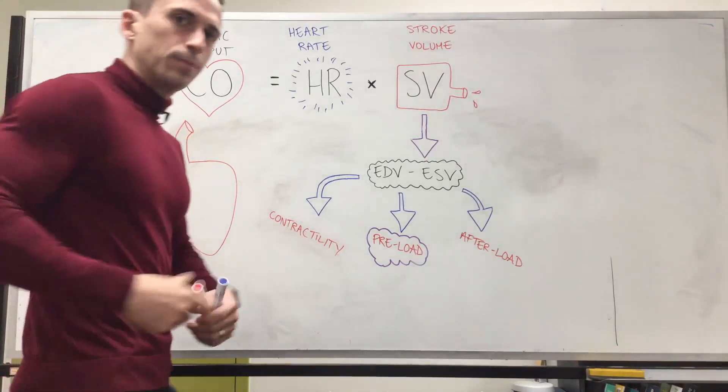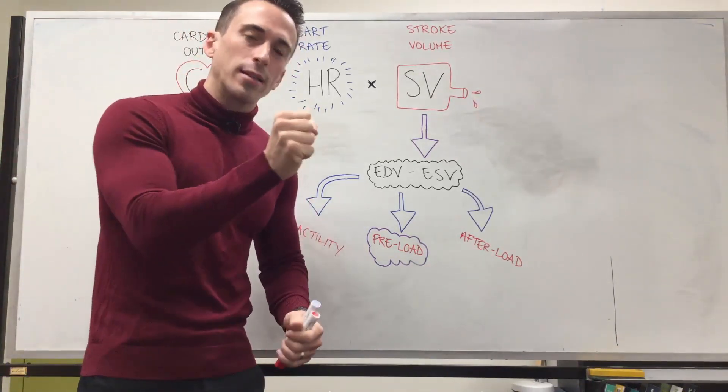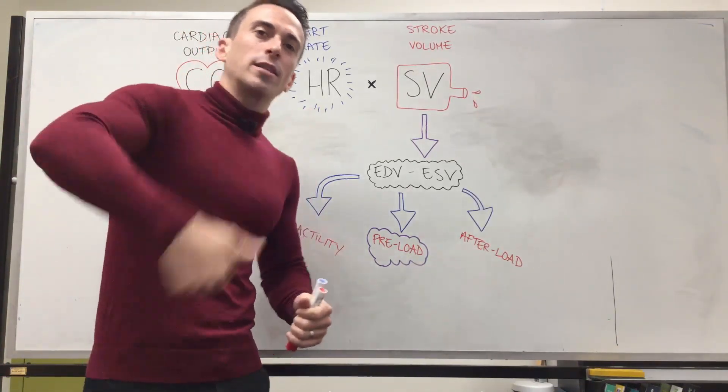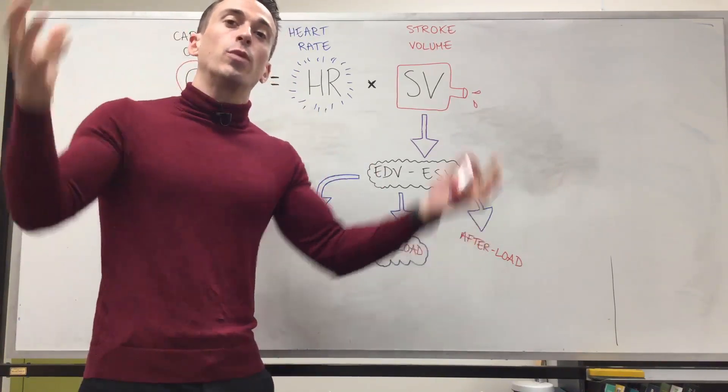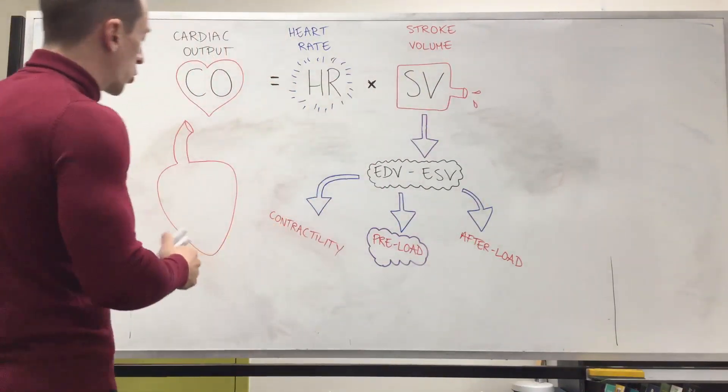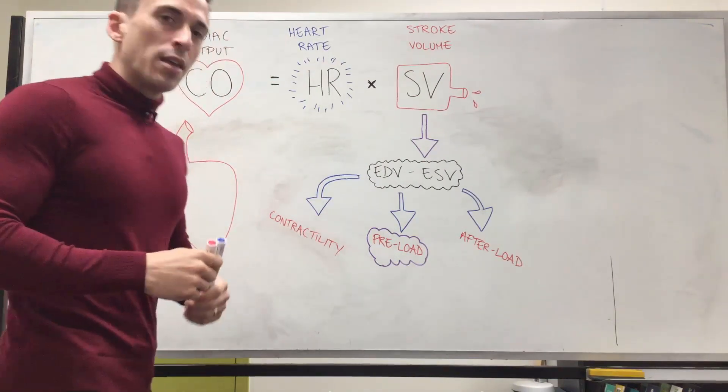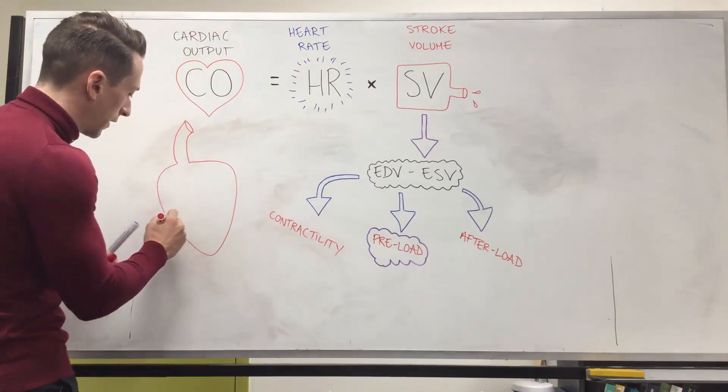Now I want you to think about this, your heart's going to contract, that's called systole. When it contracts it ejects blood and then it relaxes and that's called diastole and that's when it fills with blood. We're going to talk right now about diastole. The heart is relaxed and it begins to fill up with blood.